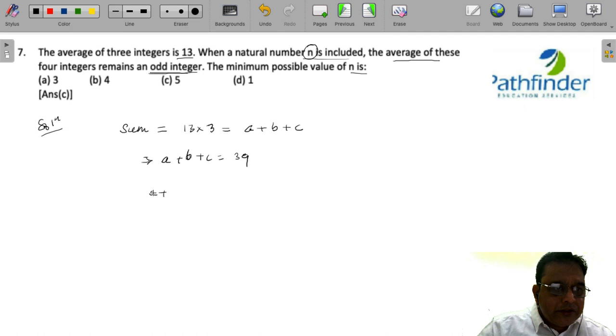That means you have a plus b plus c plus the fourth integer d upon 4 as an odd integer. We already have the value of a plus b plus c. So, 39 plus d divided by 4 must be an odd integer.